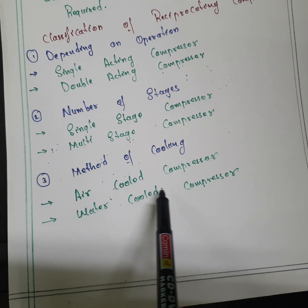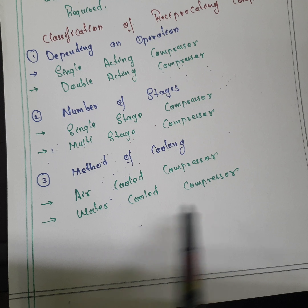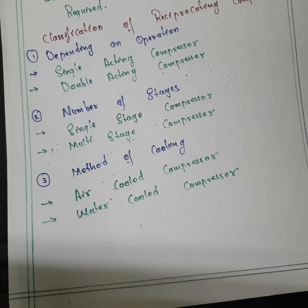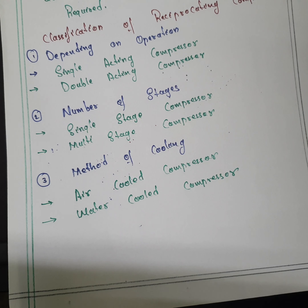Third classification: method of cooling. The compressor can be cooled using air or using water, giving air-cooled and water-cooled types. So the classification of air compressors is divided into three categories: (1) depending on operation — single or double acting; (2) number of stages — single-stage or multi-stage; (3) method of cooling — air-cooled or water-cooled.